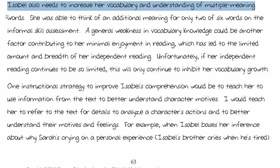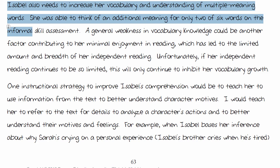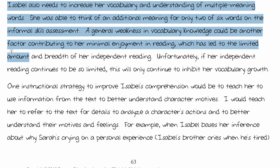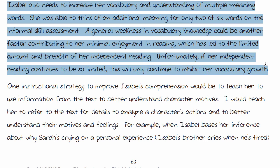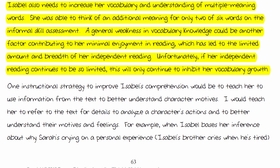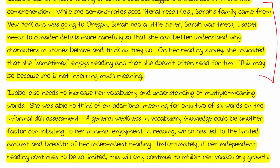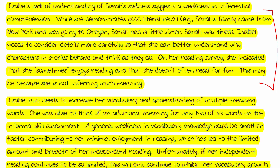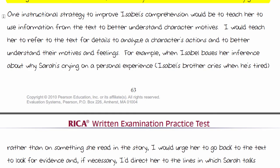I would recommend sticking to two strengths in the opening if you can find them, because then you can take statements she made as support for what she can do. This paragraph I would have fashioned around the two needs — inferential comprehension and vocabulary. But this worked, apparently. Isabel also needs to increase her vocabulary and understanding of multiple meaning words. She was able to think of an additional meaning for only two of the six words on the informal reading assessment. You need two needs because you need to write two lesson plans and two benefits.